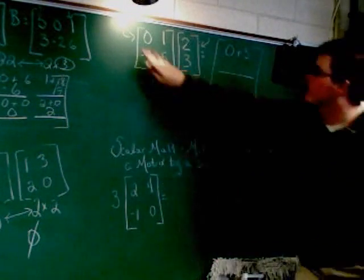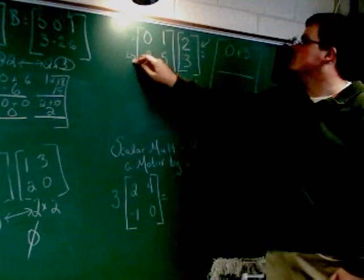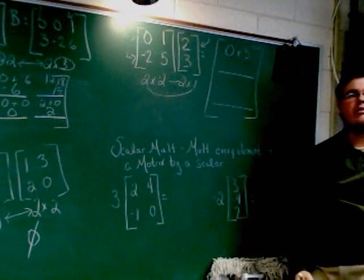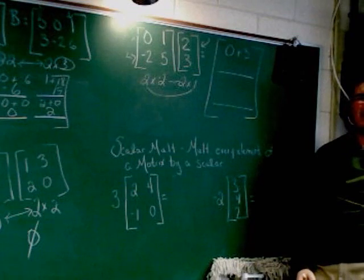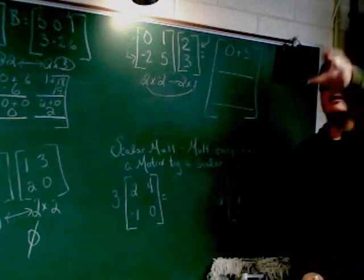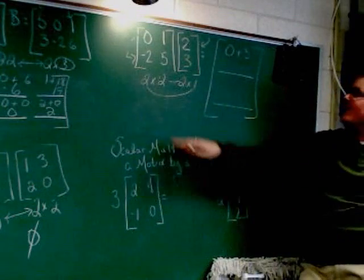Row 2, column 1. So row 2 with column 1. Negative 2 times 2. What? 10 yards. Let's try this again.